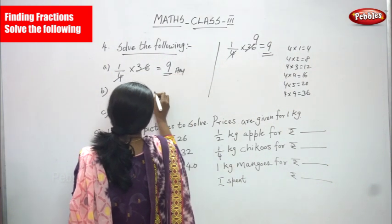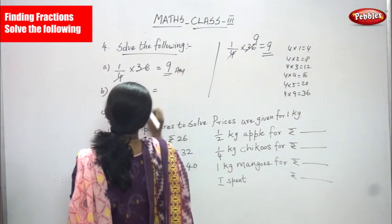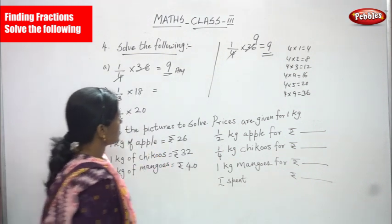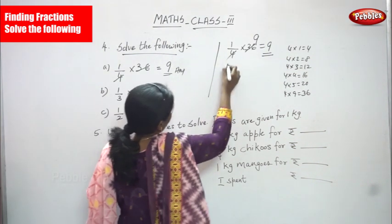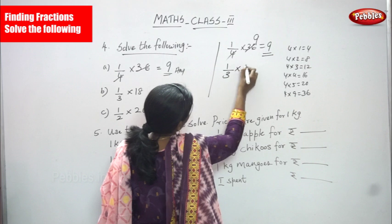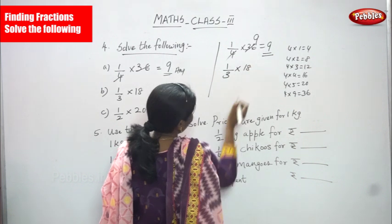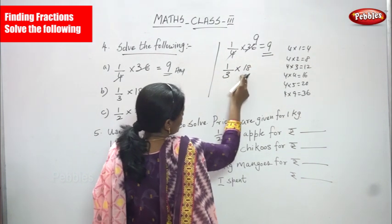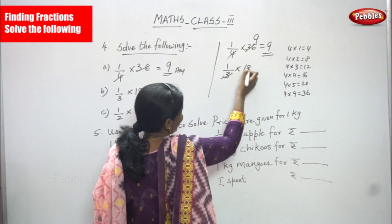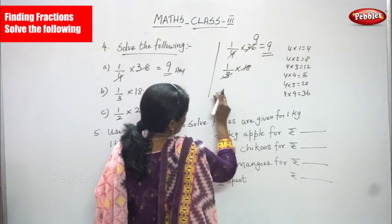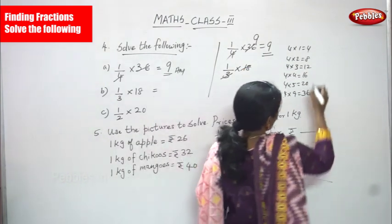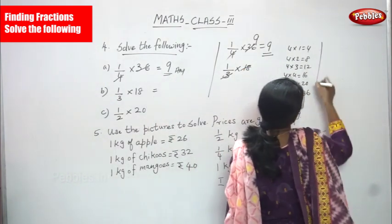The second question: 1/3 × 18. One-third is going to be multiplied by 18, so 18 is going to be cancelled by 3. You must use the third table: 3 1's are 3.